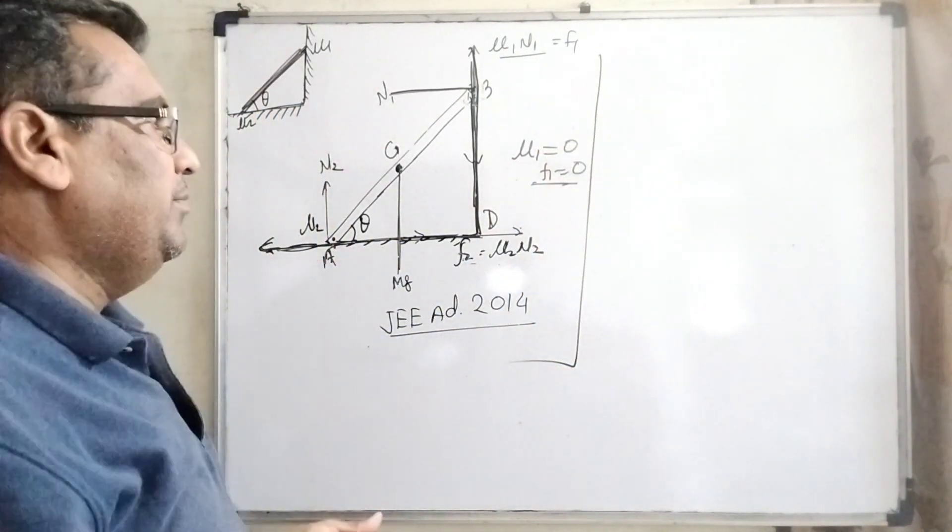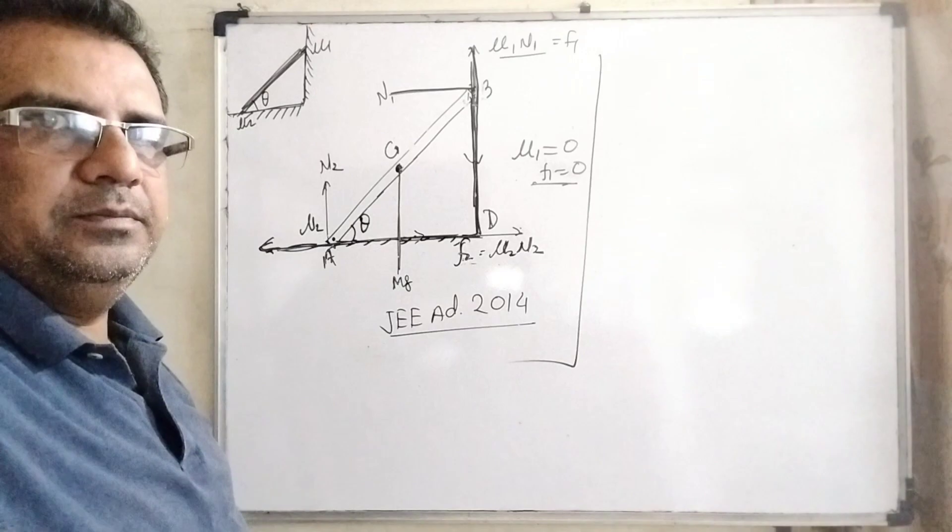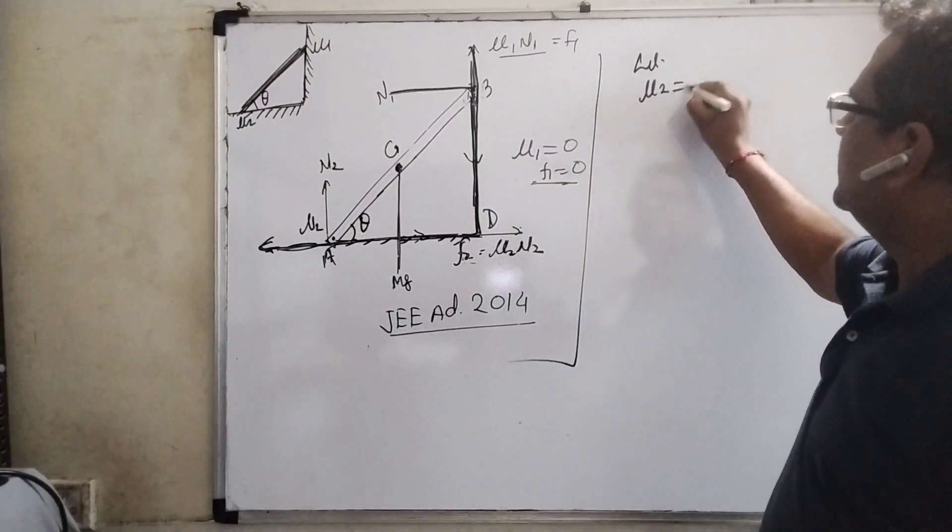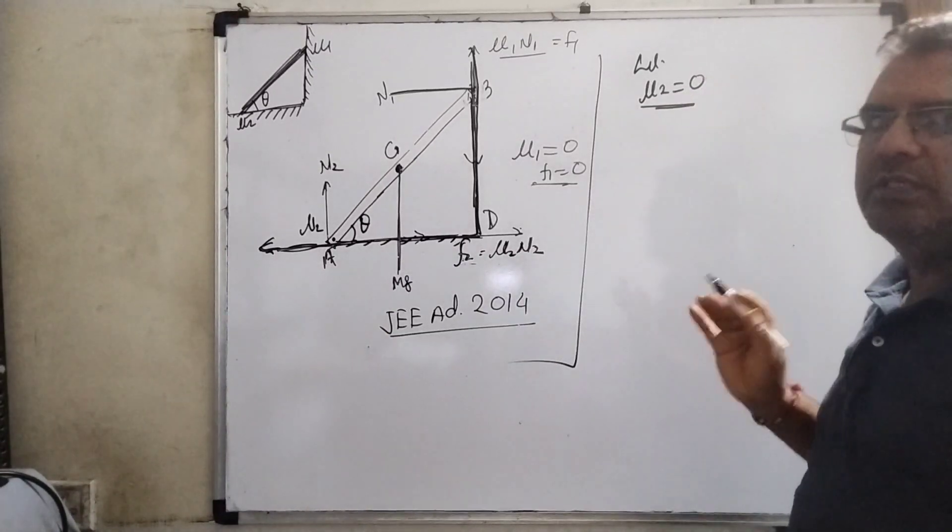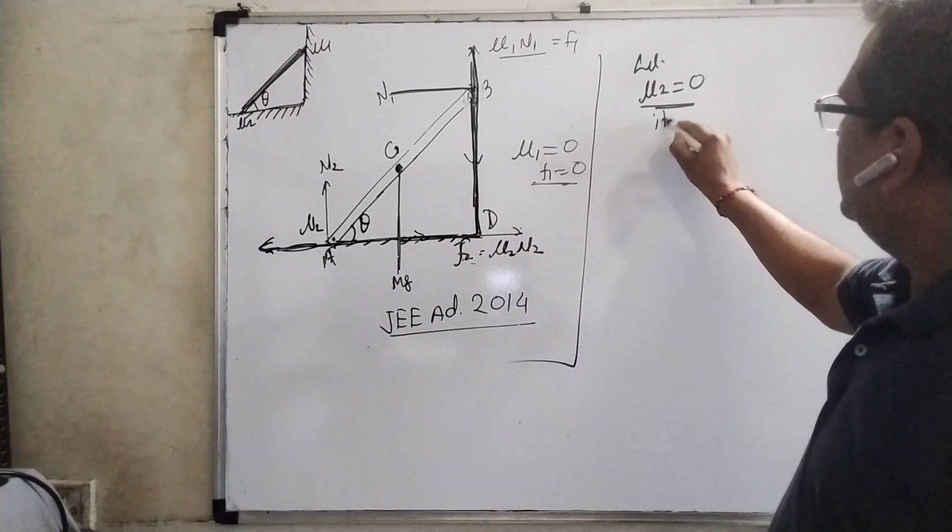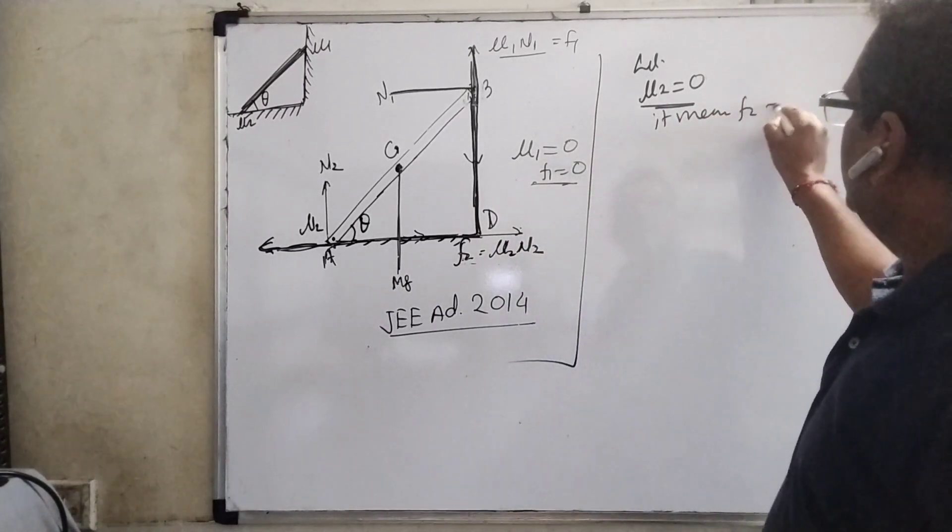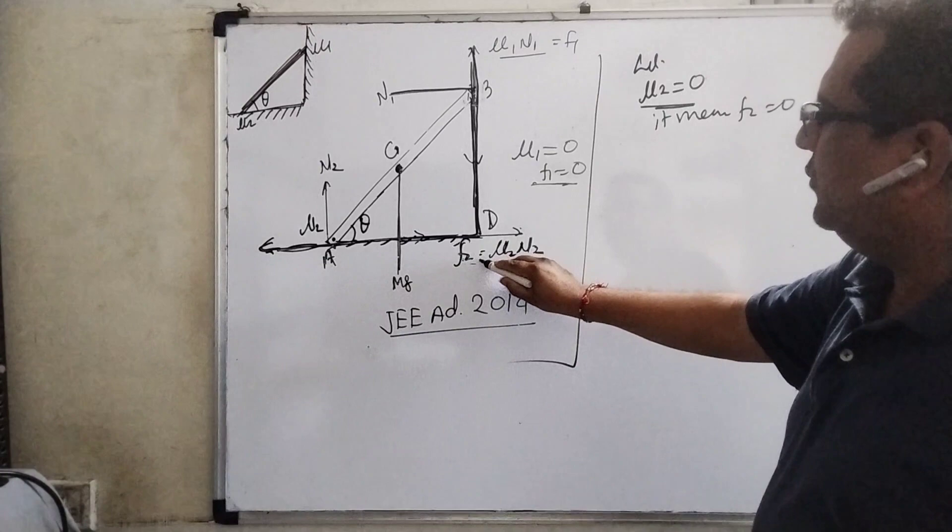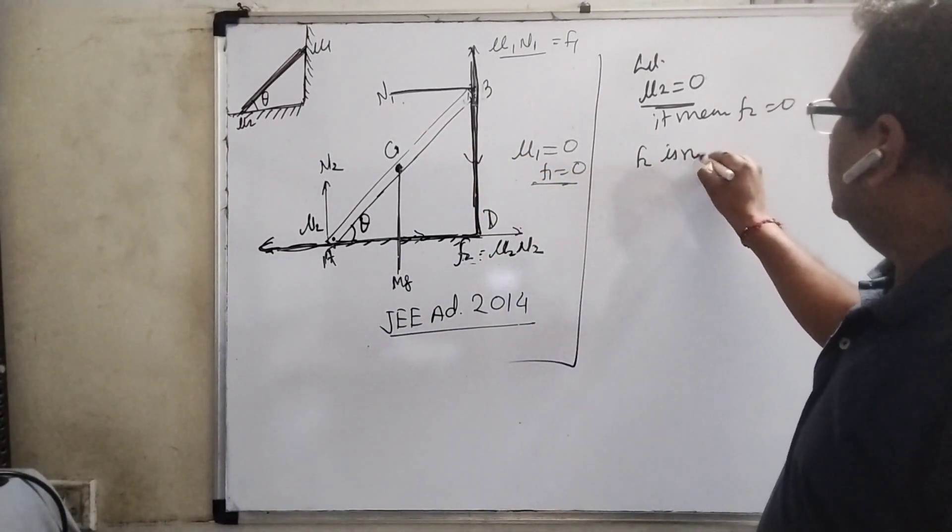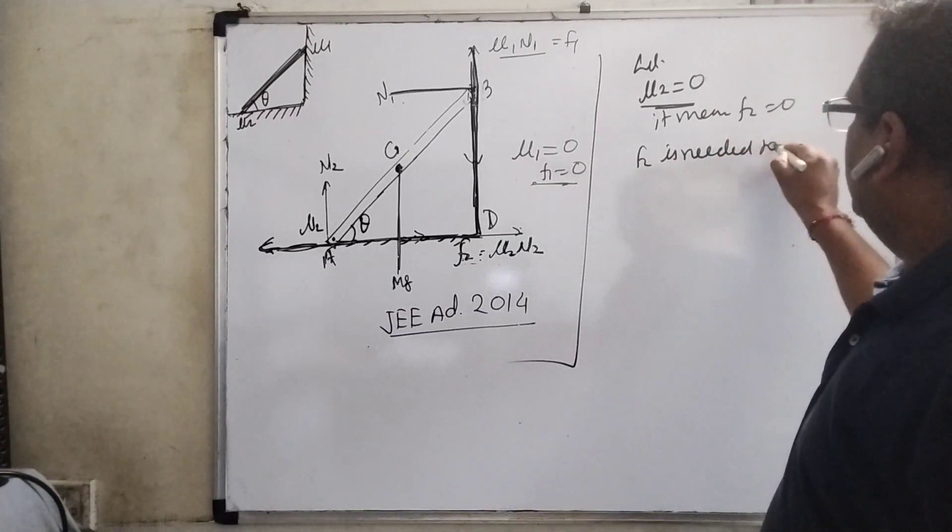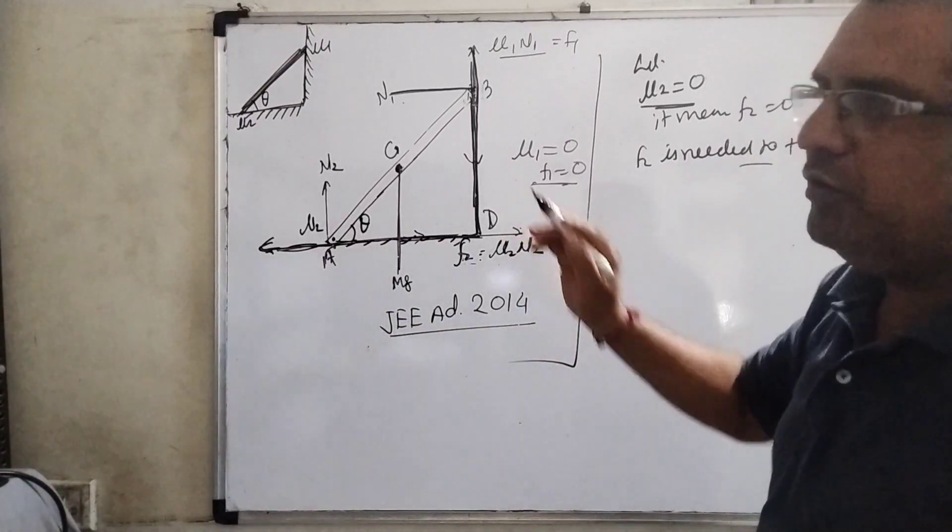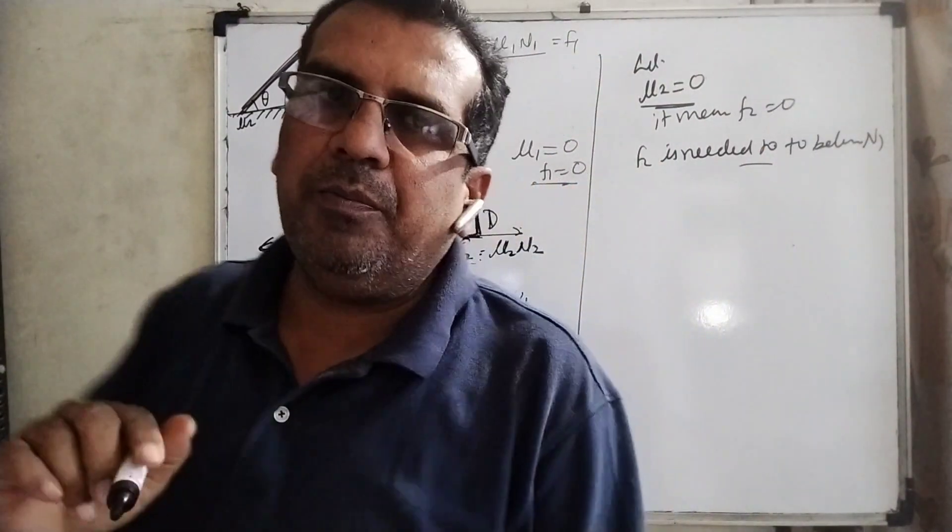Now we are going to go one by one through our concepts. First thing, let mu2 be considered 0. Suppose mu2 becomes 0, it means f2 equals 0. And f2 is needed to balance N1. f2 is needed to balance N1. So therefore this condition is not applicable.